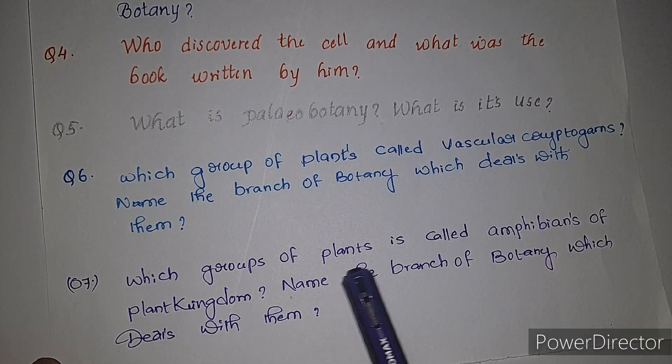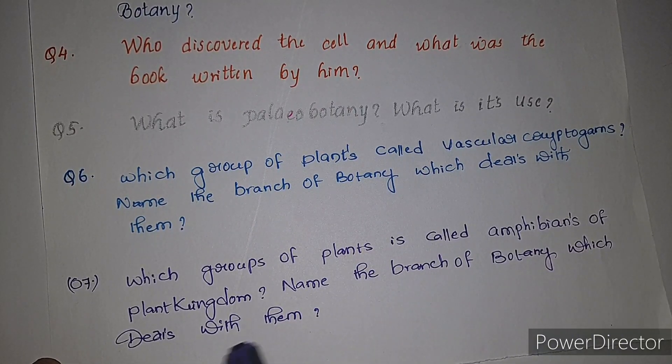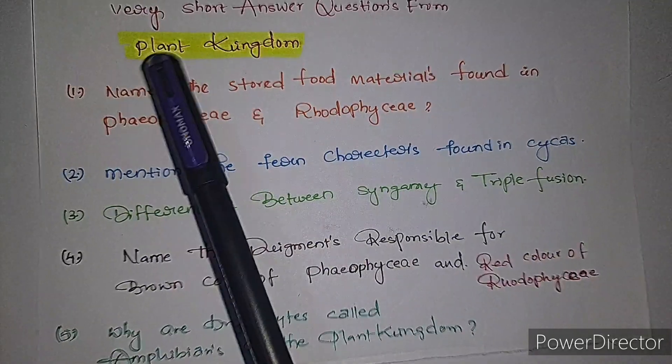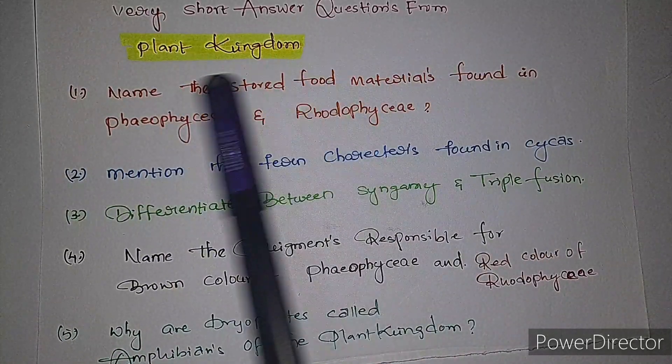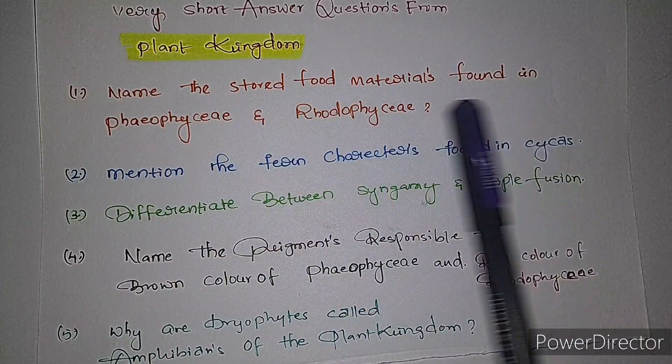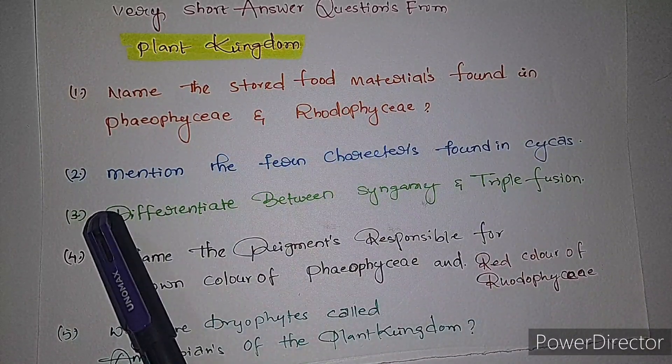Very short answer questions from plant kingdom. First question: name the stored food material found in Phaeophyceae and Rhodophyceae. Second question: mention the fern characters found in cycas.